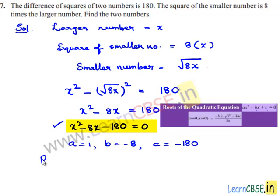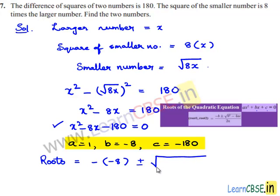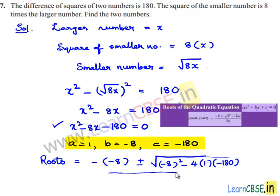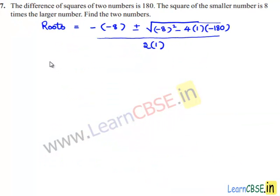So the roots become: minus b, which is minus of minus 8, plus or minus the square root of b² — that is (minus 8)² — minus 4ac, where 4 times a is 1 and c is minus 180, all divided by 2 times a which is 2 times 1. So this equals 8 plus or minus the square root of 64 plus 720, divided by 2.